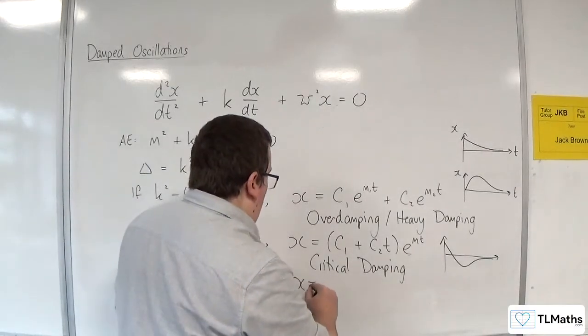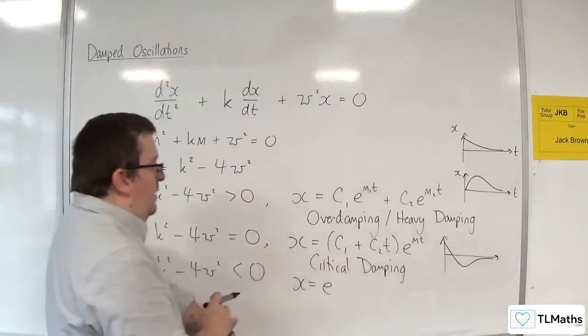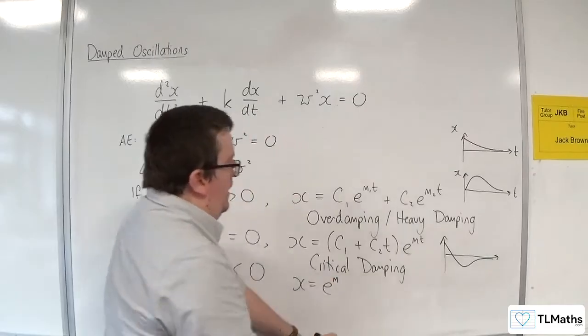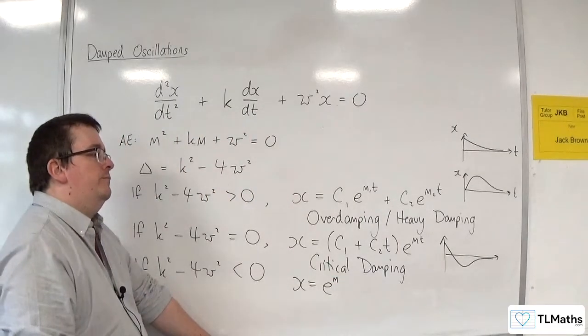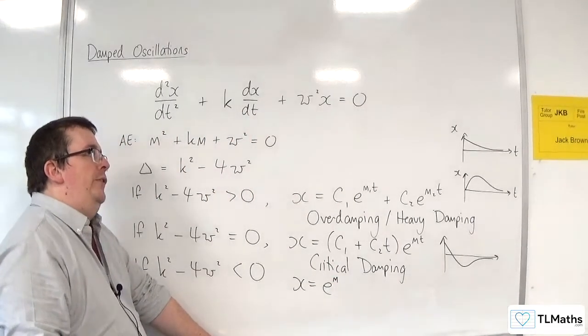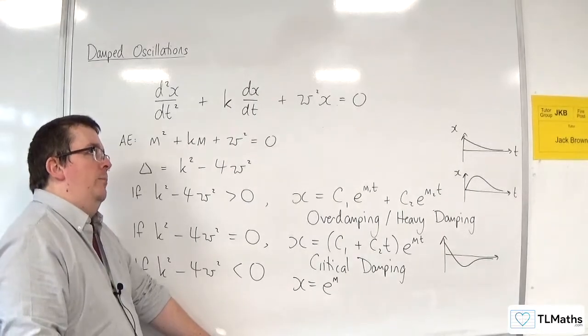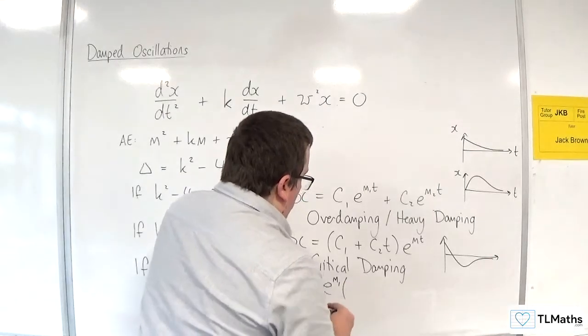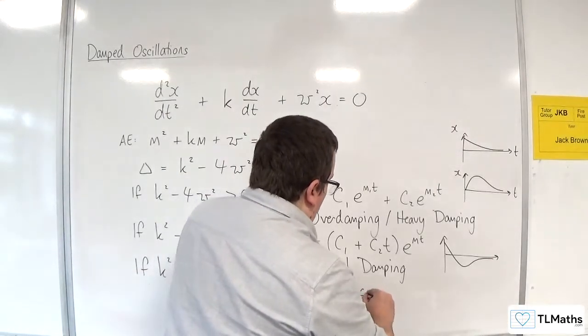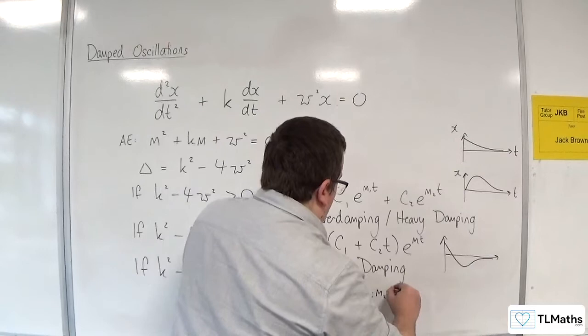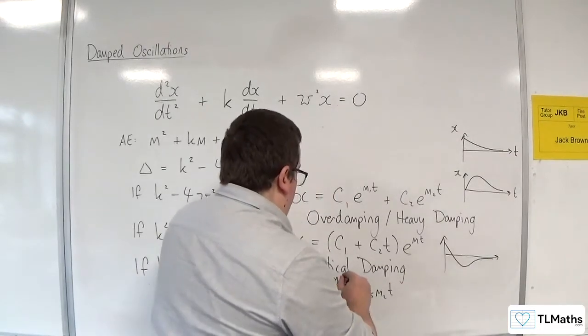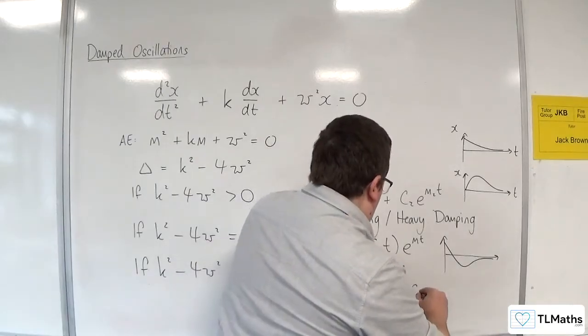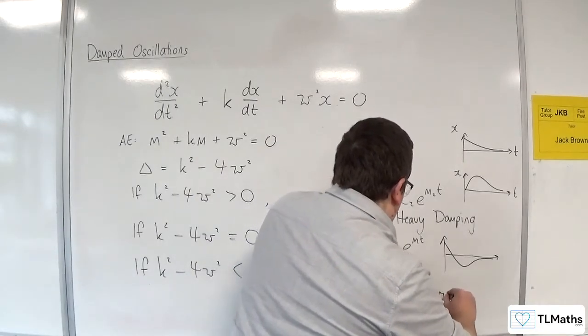So we get x is equal to e^(m₁t) times C₁cos(m₂t) plus C₂sin(m₂t).